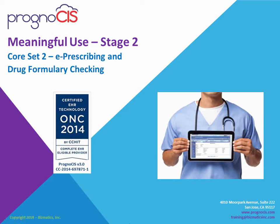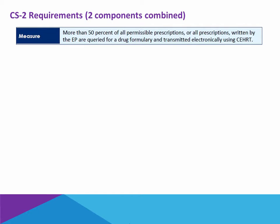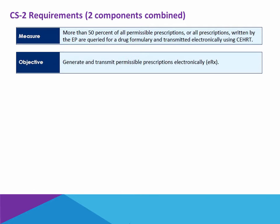Meaningful Use Stage 2 Core Set 2 covers e-Prescribing and Drug Formulary Checking. The requirements actually consist of two components combined into one, measuring that more than 50 percent of all prescriptions written by the eligible provider are both queried for drug formulary and transmitted electronically from the EHR. The objective is to ensure that permissible prescriptions are being transmitted electronically.